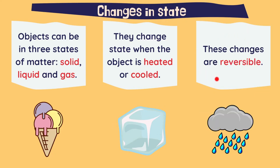These changes are reversible. If we take an ice cube from the freezer and leave it outside, it will melt and transform into liquid water. But we can put the water back to the fridge and we will have a frozen ice cube again. The same with this ice cream, it is melting, but we can put it back in the fridge or the freezer.